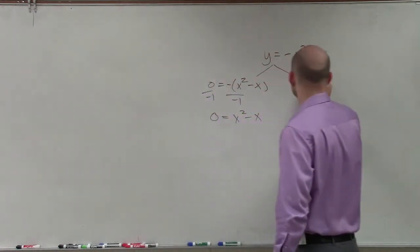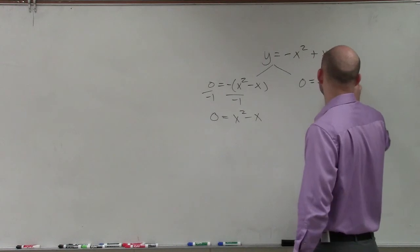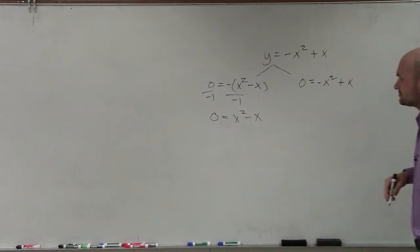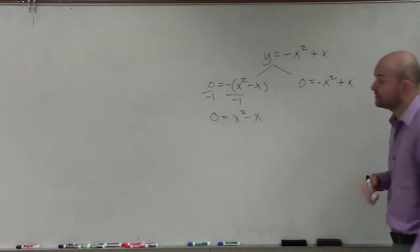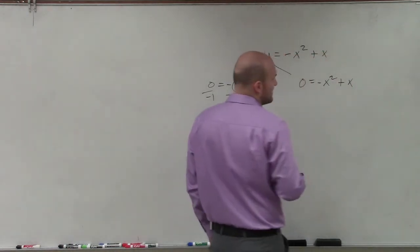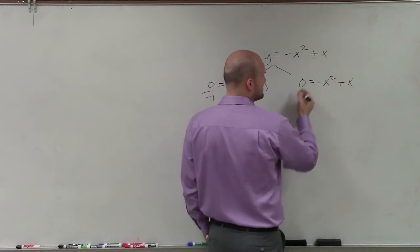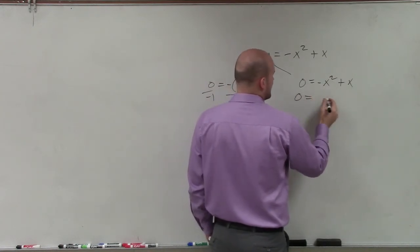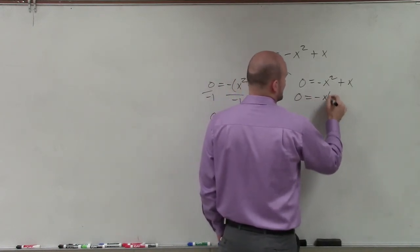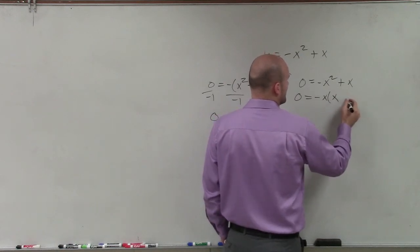Or you could also just say, well, 0 equals negative x squared plus x. And then what you could simply do is factor out an x, or I'm sorry, negative x or not factor out a negative x. But in this case, if I factor out a negative x, then I'd have 0 equals negative x times x minus 1.